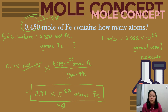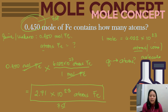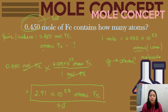There will also be problems where you are given grams and asked for atoms — that is our last problem. This involves a two-step process. The first three problems only required one conversion factor, but this last problem will require two conversion factors to arrive at the correct answer.